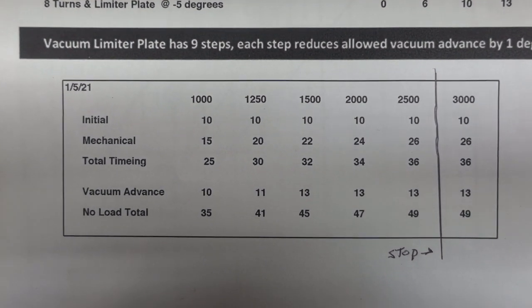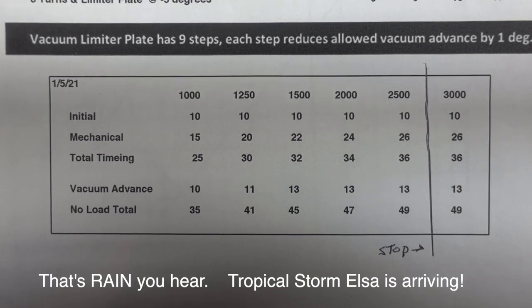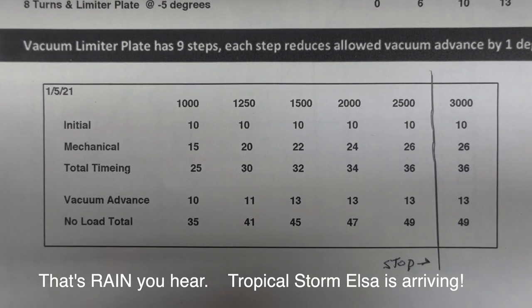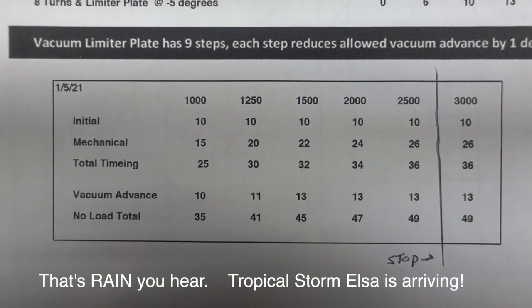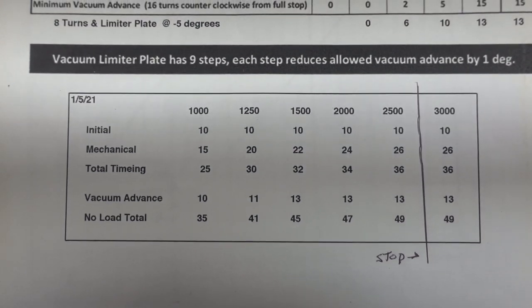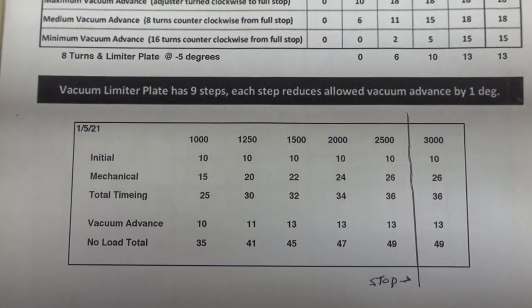This is where I want to be, and you can see here initial mechanical, how much total timing, and then how much vacuum at different RPMs. I've got this thing set up to run it. So once you get yours set up where you want it to be, then you can move on to the carburetor.